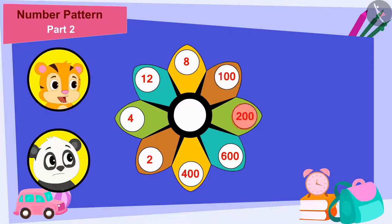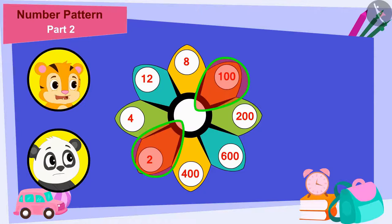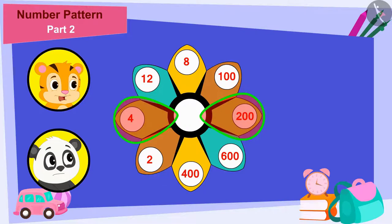'There are many numbers written here and there is only one blank space in the middle. Look Golu, first we will look at these numbers. There is number 2 written on one end of this line and 100 written on the other end. And on this line there is number 4 written on one end and 200 written on the other end.'